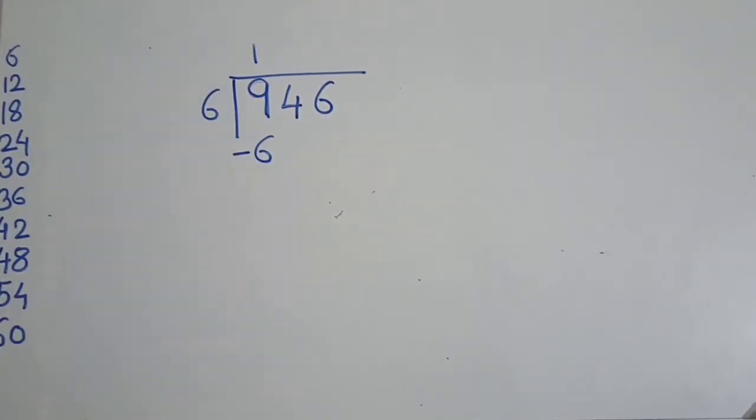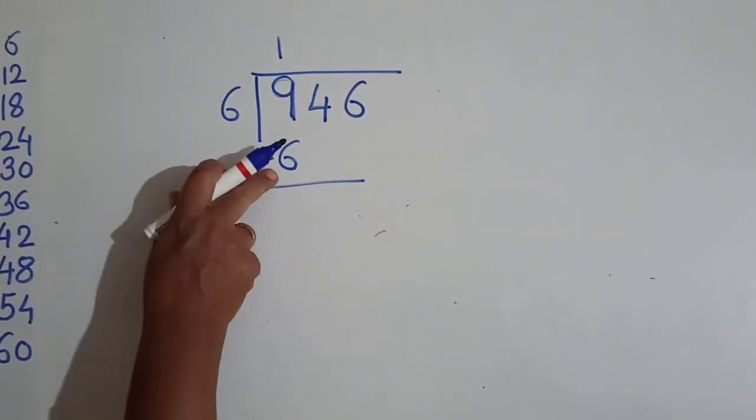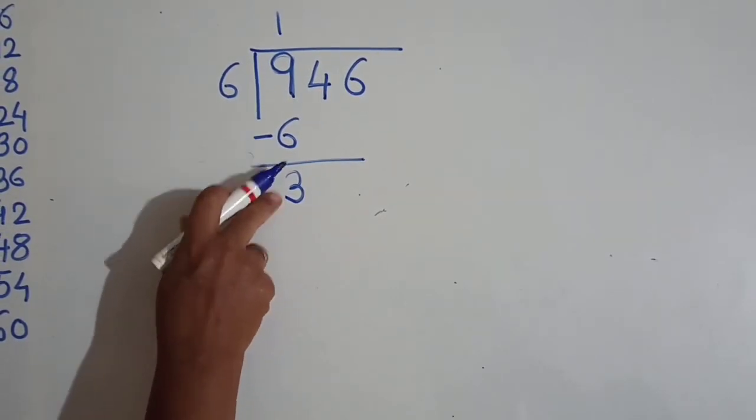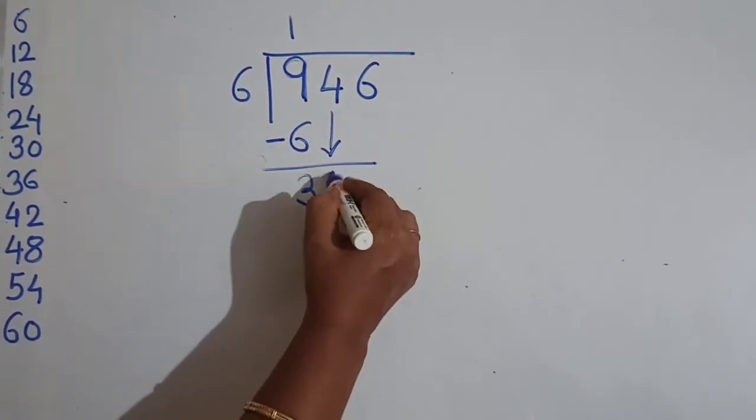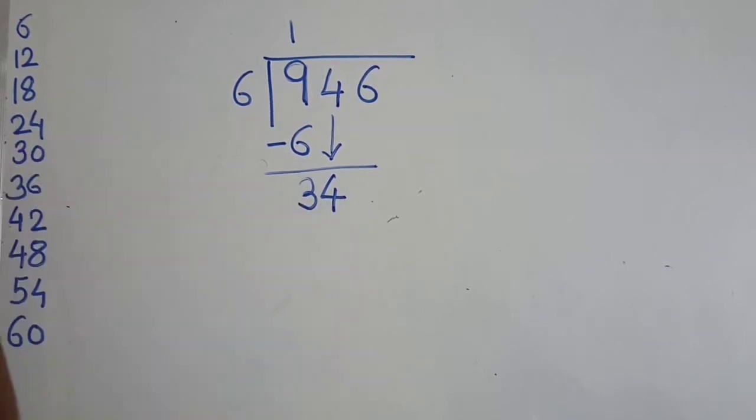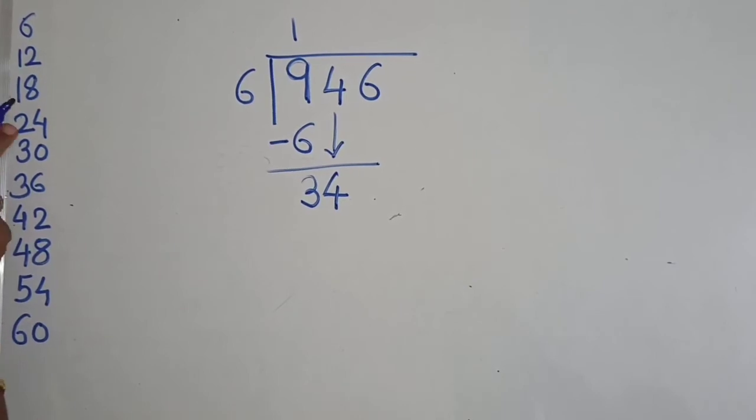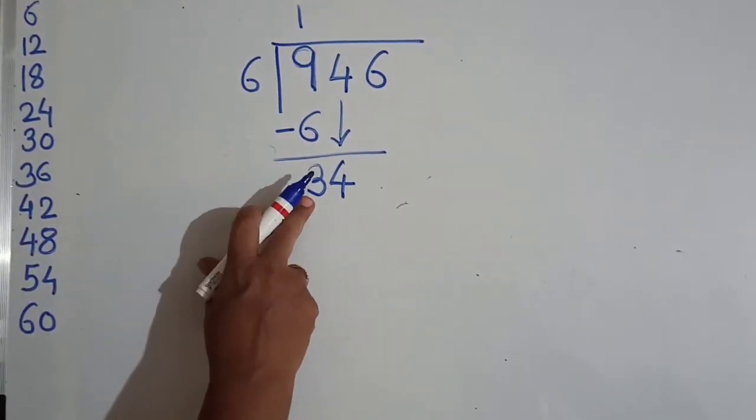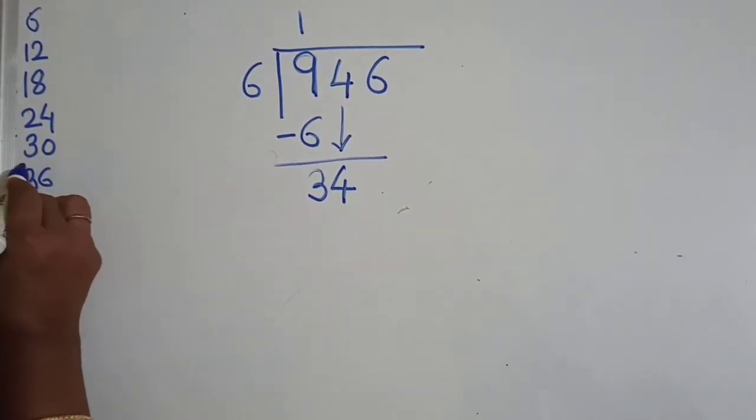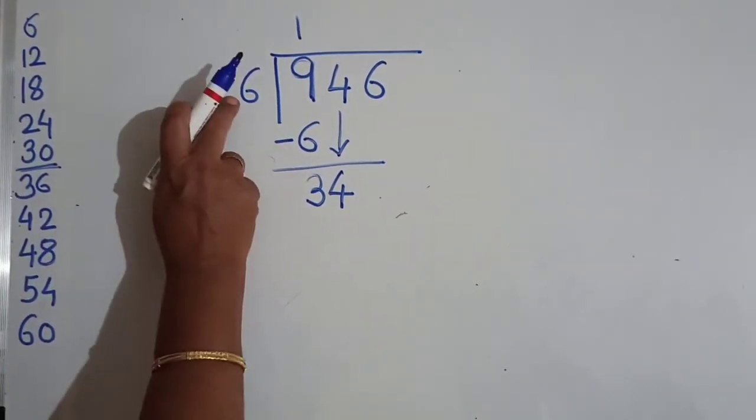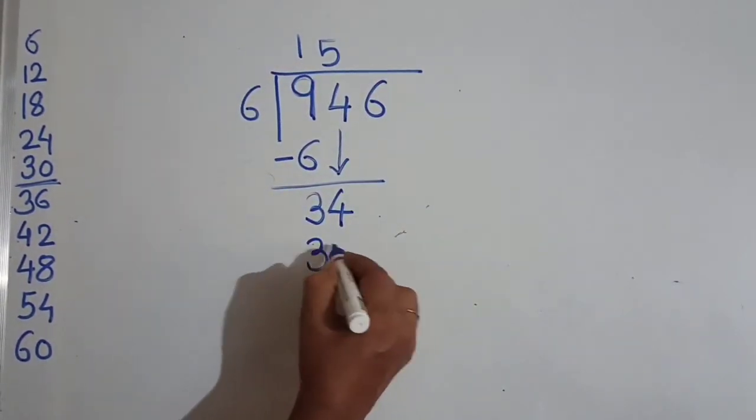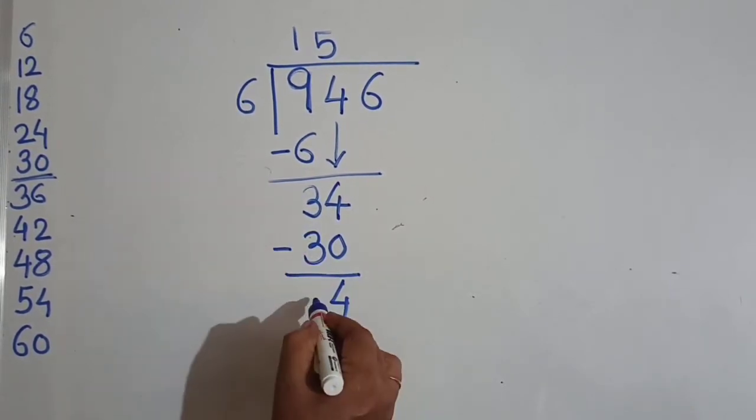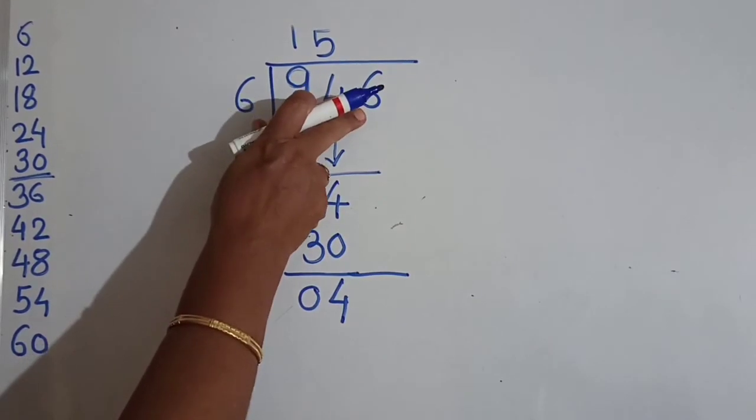Now we have to take this number 4. Now 34 number. Now see the table of 6. 6 3s are 18, 6 4s are 24, 6 5s are 30, 6 6s are 36, but this 36 is larger than 34. So we have to take this 30, means 6 5s are 30. You have to write this 30 here and do subtraction here. Now 4 minus 0 is 4, then 3 minus 3 is 0. Now this 6 take down like this.